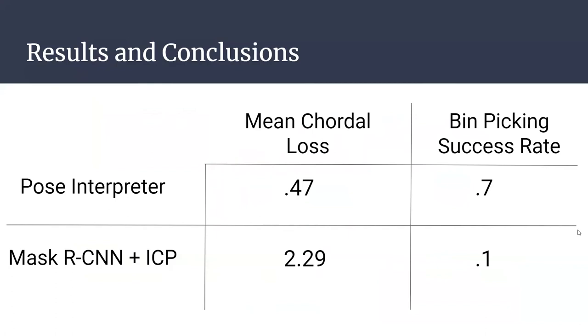We evaluate both of our methods along two different metrics, one being the mean chordal distance, and the other being the actual success rate of picking up and placing down the soup can. As you can see, the pose interpreter worked best across the board with a lower mean chordal distance and a higher success rate. Thank you.